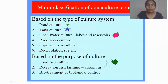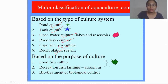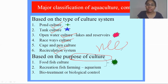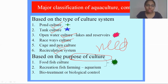Based on the type of culture system used — and this is the most important, as it is asked in exams — we have pond culture, tank culture, open water culture, raceway culture, cage and pen culture, and recirculation systems. Based on the purpose of the culture, as seen in the need section, it can be food fish culture, recreation fish farming, or biotreatment — biological treatment — because fish can provide the best protein or enzymes that can be used for the treatment of diseases.